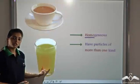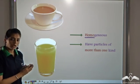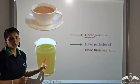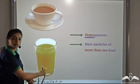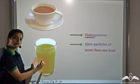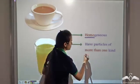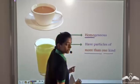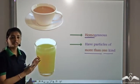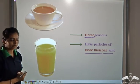If we look at orange juice, we add orange pulp to water and we get orange juice. Again, are you able to distinguish the pulp from water? No, you are not. It looks the same throughout. When a substance has the same composition or looks uniform throughout the mass, it is homogeneous. And in these substances, you have observed that they contain more than one kind of particles.